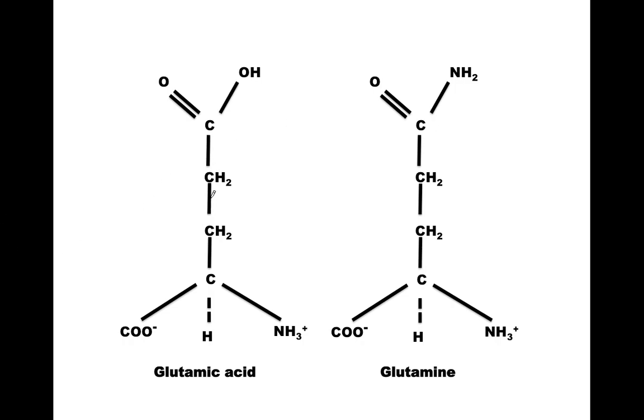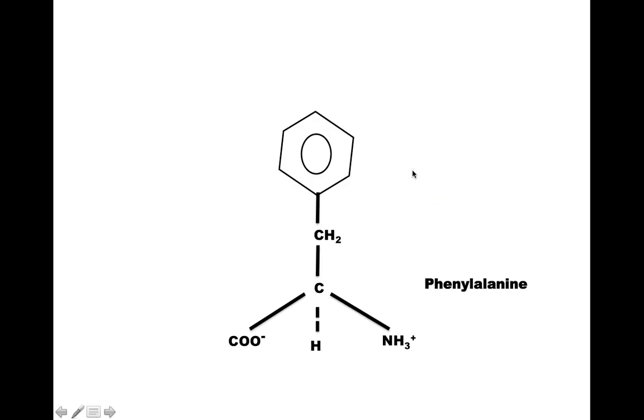To the same structure, if one more methyl group is there, which is this one, alanine with an extra methyl group and carboxyl, this is glutamic acid. And glutamine is same as asparagine, but it has an extra CH2 group. This is phenylalanine, which is alanine with a phenyl group attached.